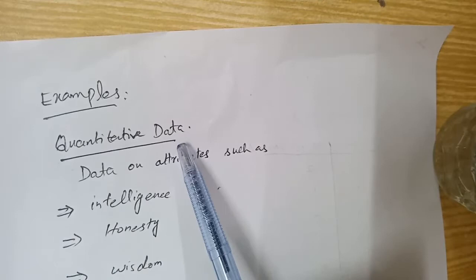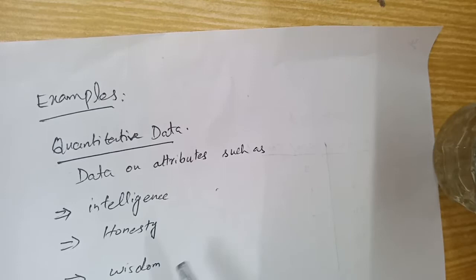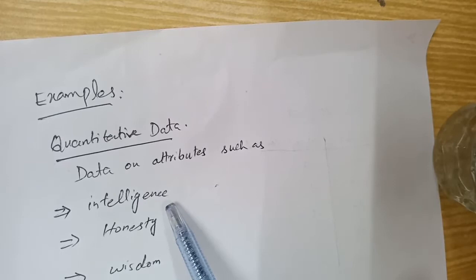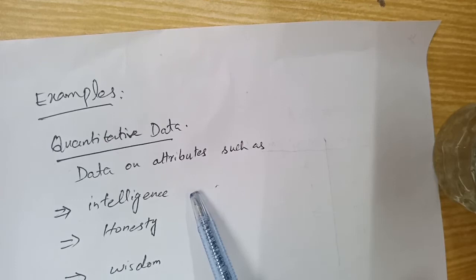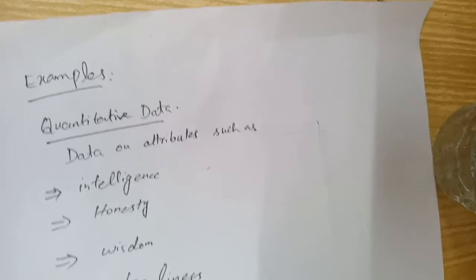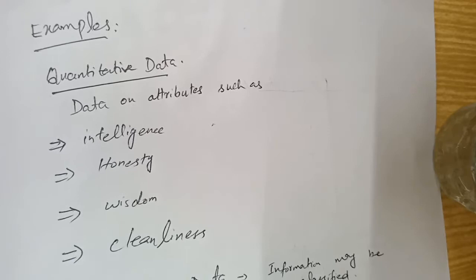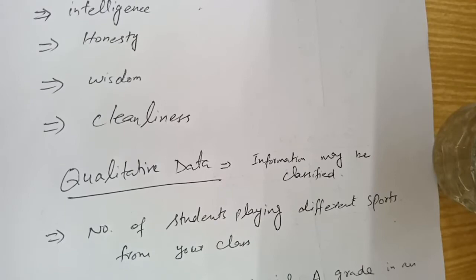For example of qualitative data: data on attributes such as intelligence, honesty, wisdom, and cleanliness — we cannot measure these things in numbers. These are examples of qualitative data from real life. Things like intelligence, honesty, wisdom, and cleanliness which don't deal with numbers are called qualitative data.